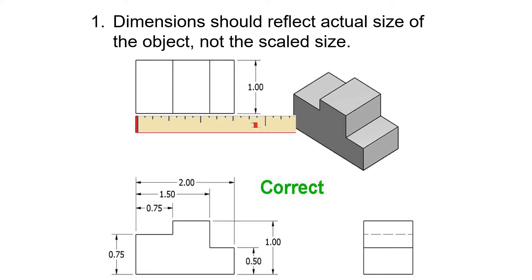So here are some of the rules. Number one: dimensions should reflect the actual size of the object, not the scaled size. You don't have to break out a ruler. The dimension measured on the drawing is three quarters of an inch, but the actual dimension of the part is two inches. Therefore, show two inches on the drawing. We don't care what's on your page—tell us what the actual part should be.